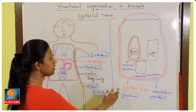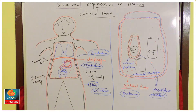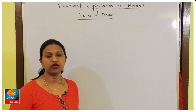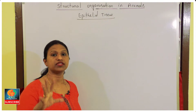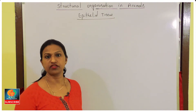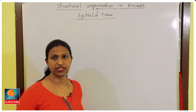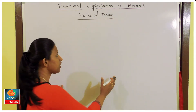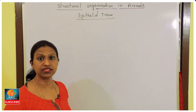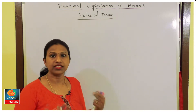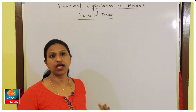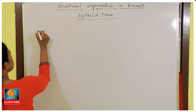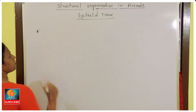Epithelial tissue is formed by all three germ layers — ectoderm, mesoderm, and endoderm. Please take a screenshot. Now we will study about the main characteristic features of epithelial tissue. We have understood where exactly it is located in the body — inside as well as outside.